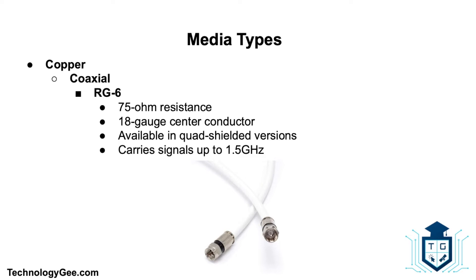Next we have coaxial cable, specifically the RG6 and RG59. Coaxial cable is the oldest type of networking cable — its data wires are surrounded by wire mesh for insulation. Prior to fiber optics, the fastest internet service available was cable internet, a form of broadband internet access which uses the same RG6 coaxial cable as cable television and adds a cable modem to convert the signal.